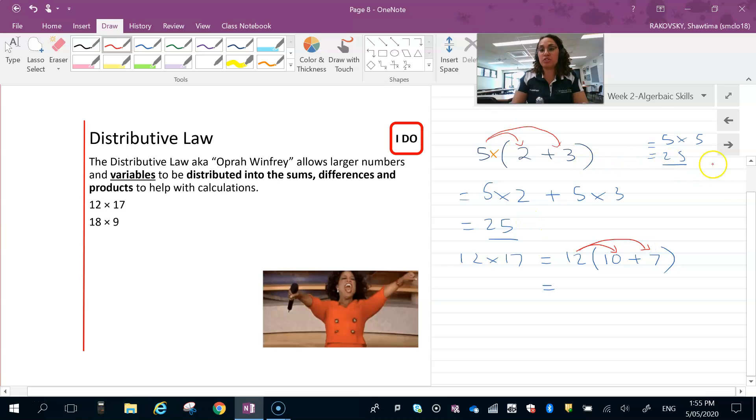So let's distribute that 12 across everything in the brackets. This is essentially what you're doing when you do long multiplication. 12 times 10 is 120, plus 7 times 12, so that would be 77... 84, and then you would add those two together.